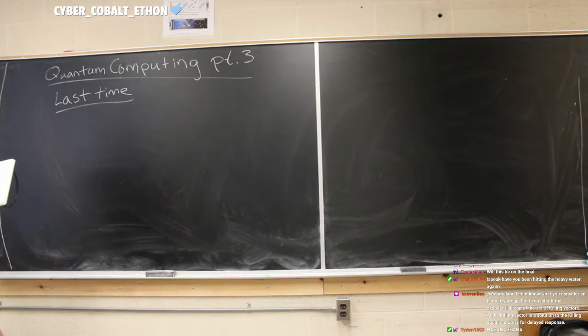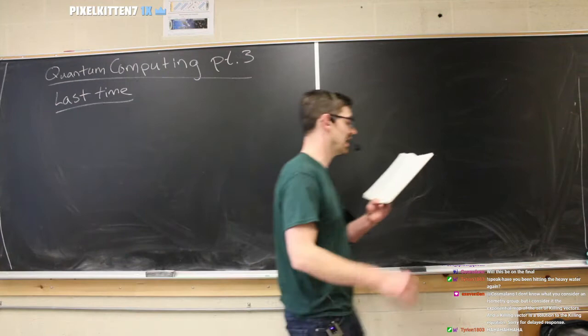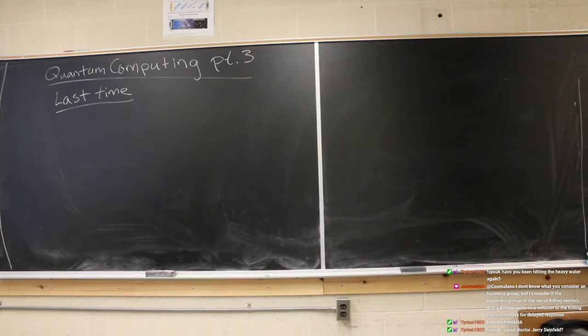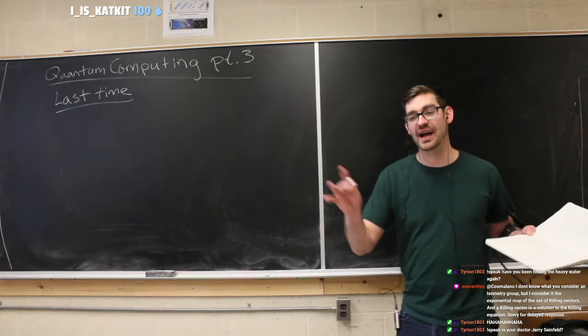We learned last week about how operators in quantum computing work — how quantum gates can manipulate bits of information that we called qubits, because they're quantum bits of information. Much like the authors of the book we're following — Nielsen and Chuang — we like to draw analogies between quantum computing and classical computing.